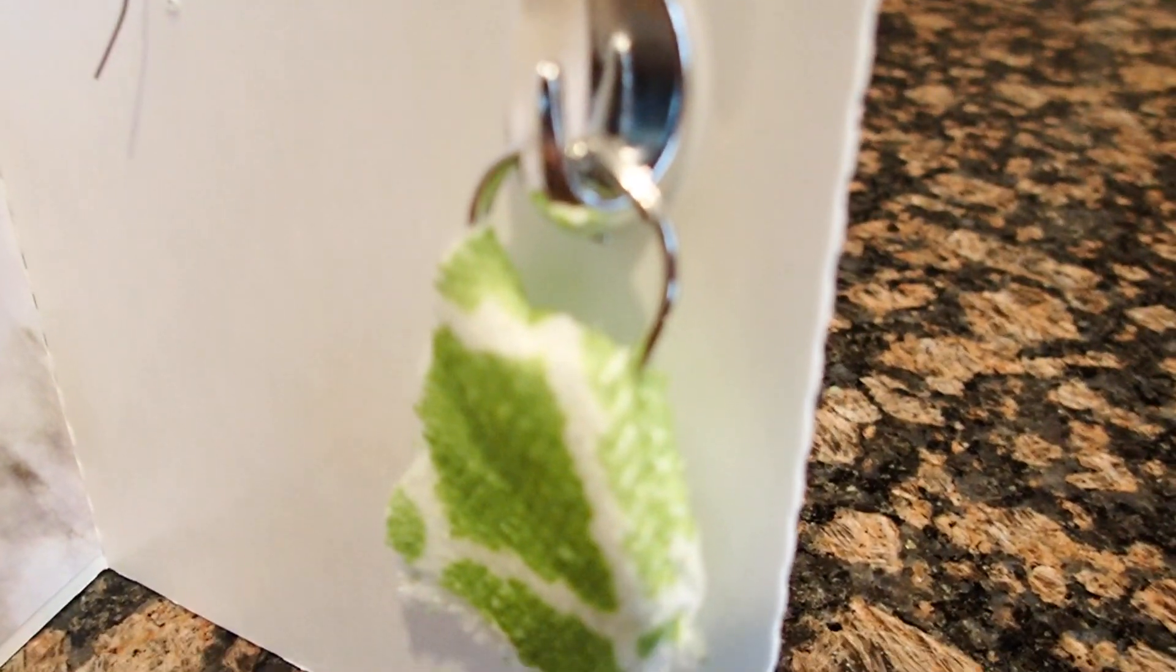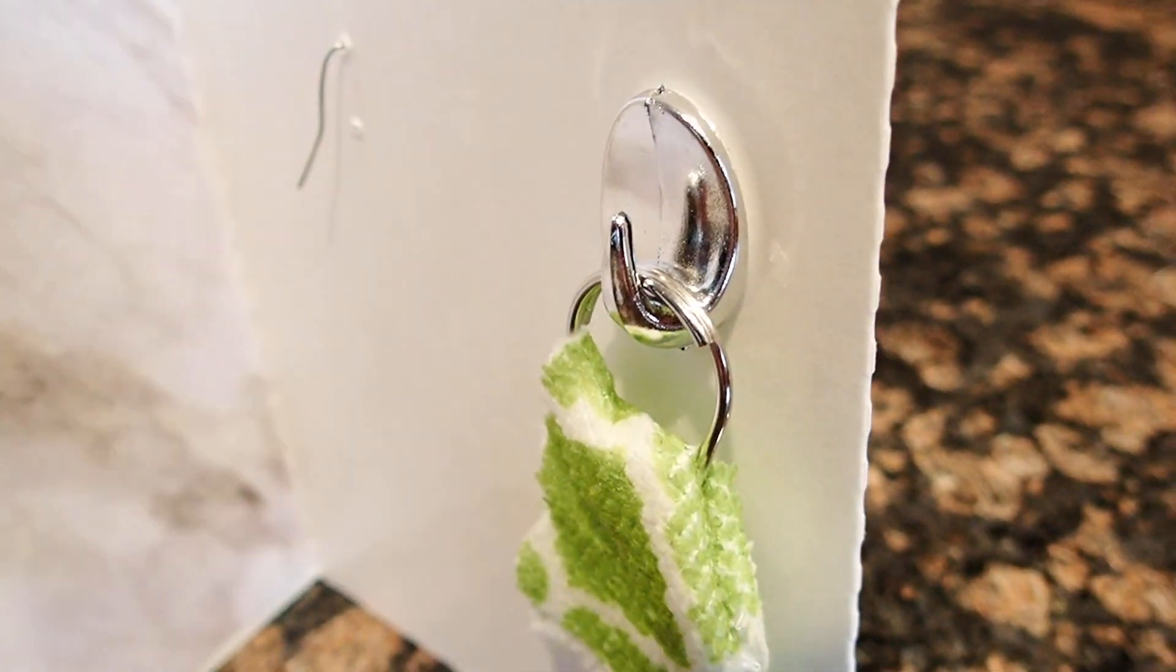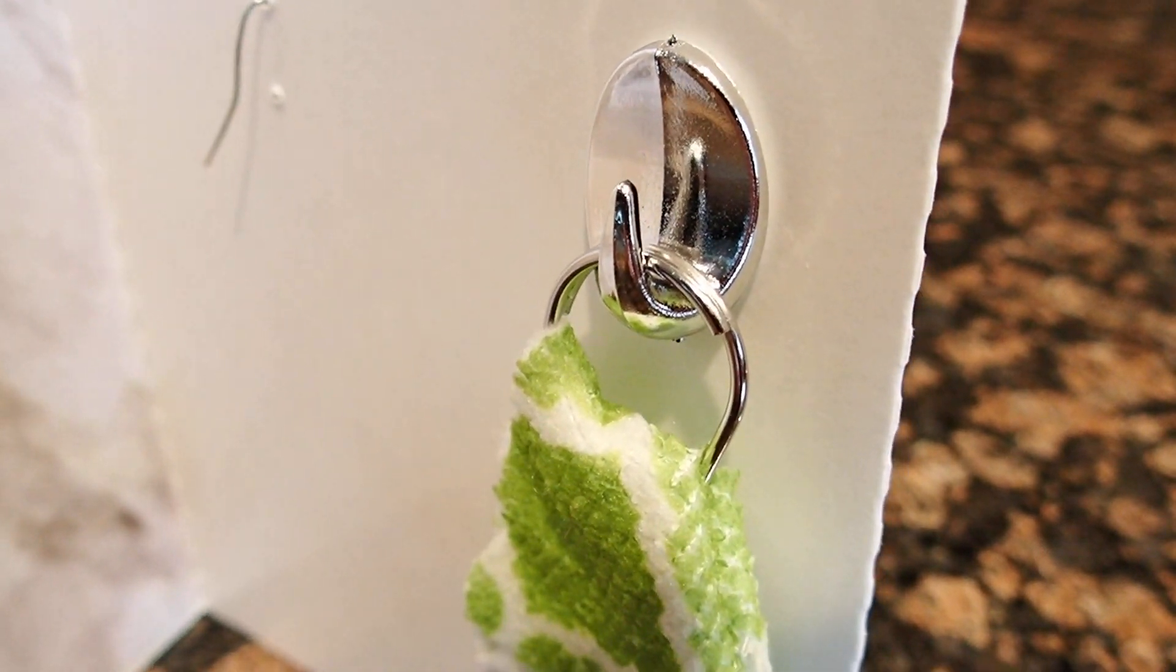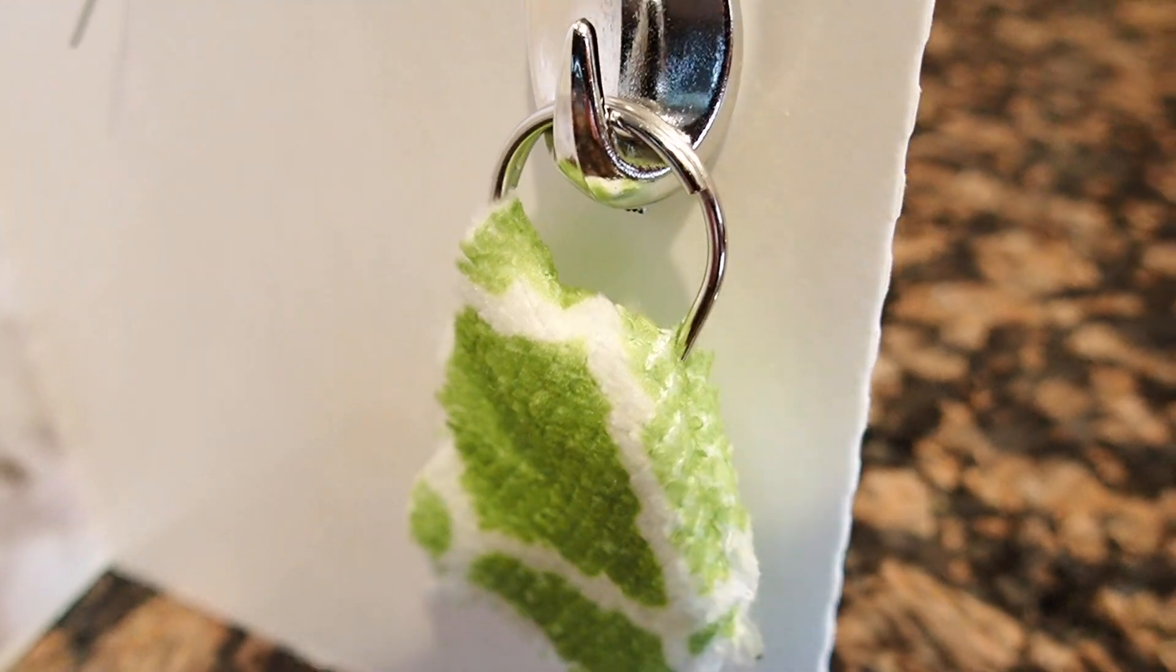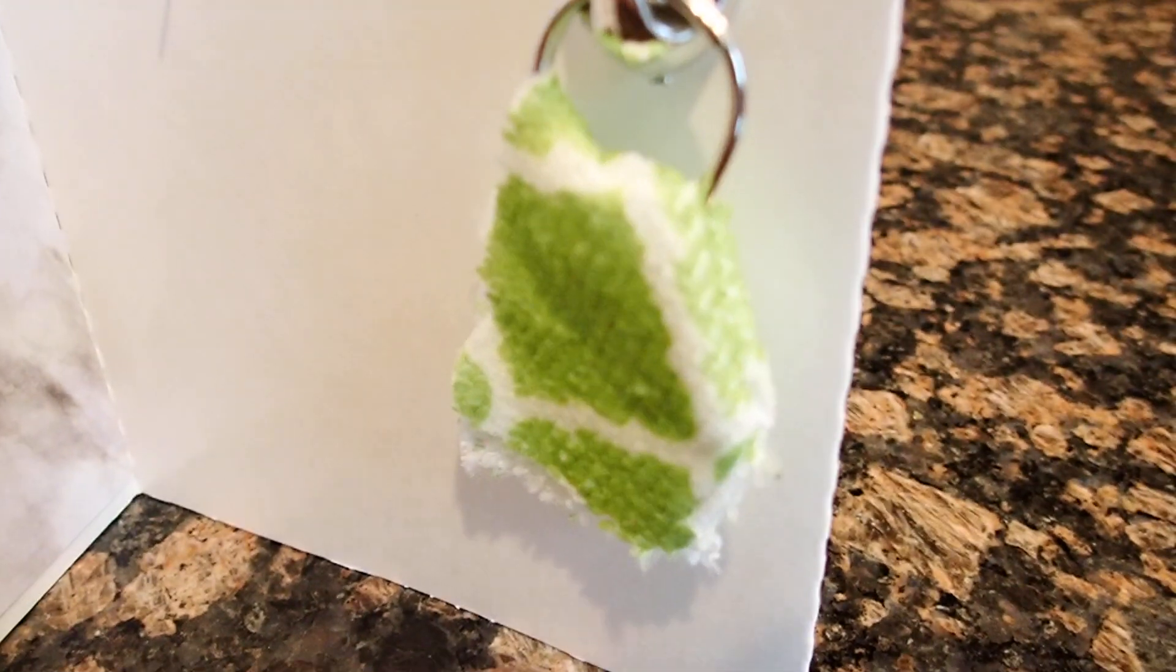So what I did was, over here, I got a little hook. Those are hooks from the Dollar Tree. They're adhesive and you can get a few of them in a pack. It's upside down purposely so that it can hold the ring of the towel. The towel is just a piece of cloth that I cut out.